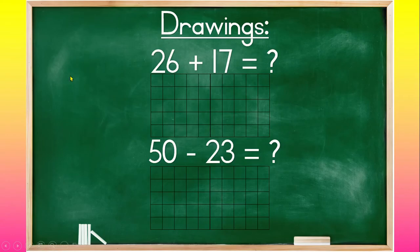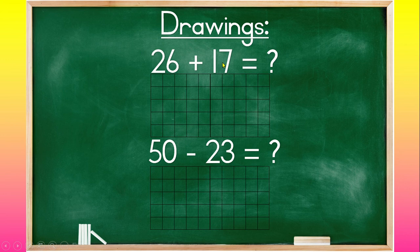So first we are going to look at the drawings. Over here I have 26 plus 17 and 50 minus 23. So first let's do 26 plus 17. Over here I have a 50 grid because we are only going to do sums up to 50.